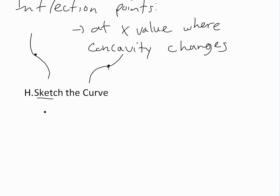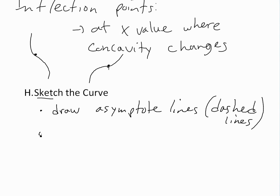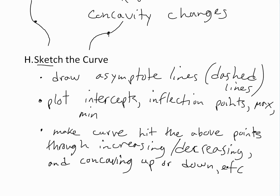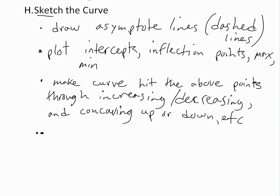The last step is part H — just sketch the curve. First, draw the asymptote lines, which are usually dashed lines. Then plot all your important information: intercepts, inflection points, and local maxima and minima. Then make the curve go through these points, either rising or decreasing depending on the concavity and increase-decrease test. If needed, you can also plot out specific f of x values at certain locations to make it more accurate.